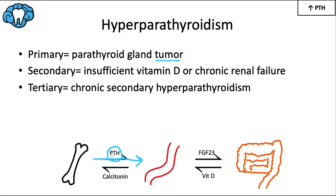Secondary hyperparathyroidism would be treated by correcting the underlying cause — either with vitamin supplementation or a renal transplant. Tertiary hyperparathyroidism occurs when secondary hyperparathyroidism persists for a long time, causing the glands to become hyperplastic. Even after the secondary cause is treated, baseline PTH remains elevated, leading again to hypercalcemia; this is treated by surgical removal of the hyperplastic parathyroid tissue.